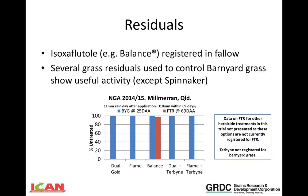One point to watch is the residual of some of these herbicides, particularly if going back to sorghum as a following crop. With the exception of Dual Gold, which is registered for pre-emergent use in sorghum, many of the other herbicides have substantial plant-back constraints particularly to sorghum and, to a lesser but still significant extent, plant-back to cereals also needs to be managed according to label directions.